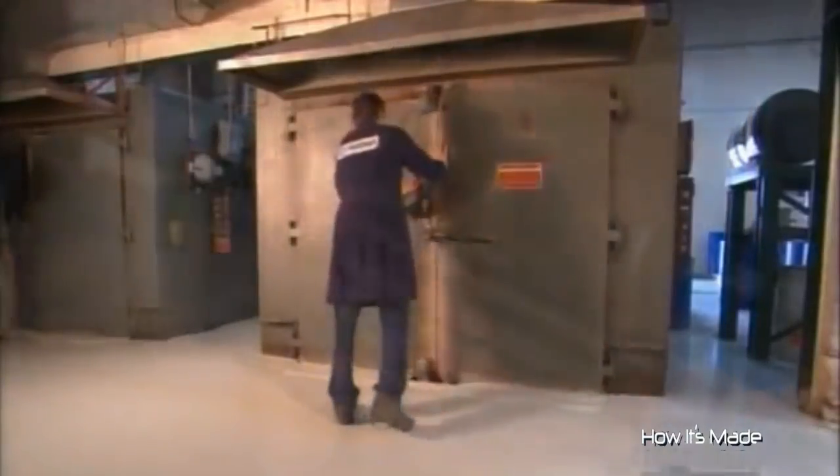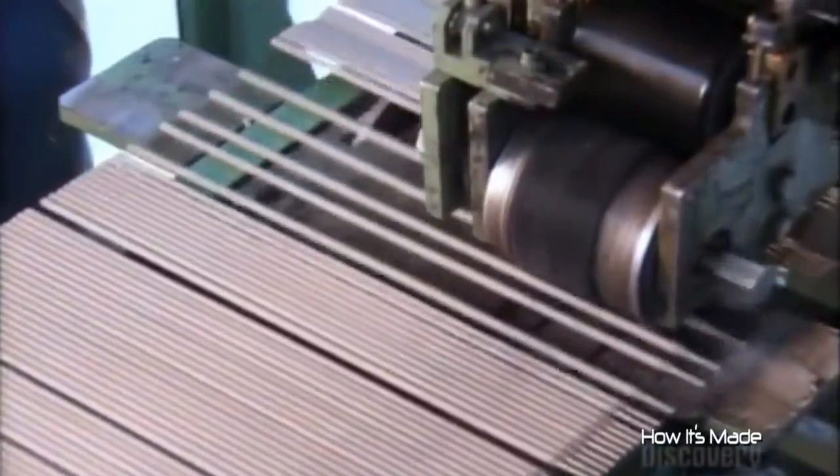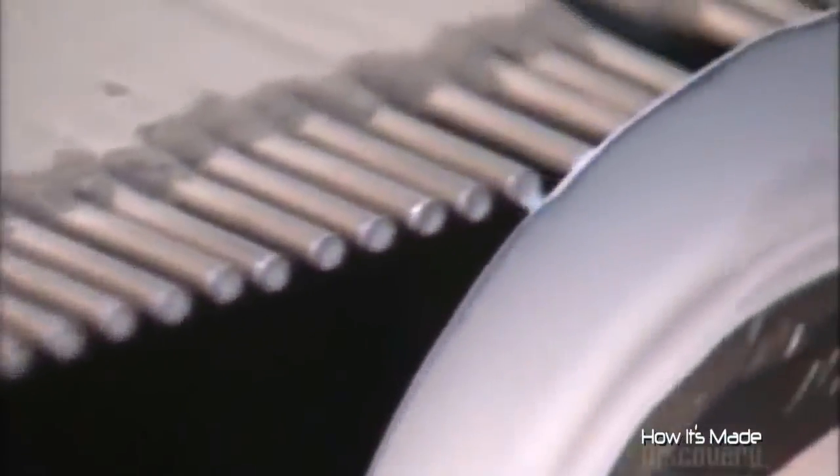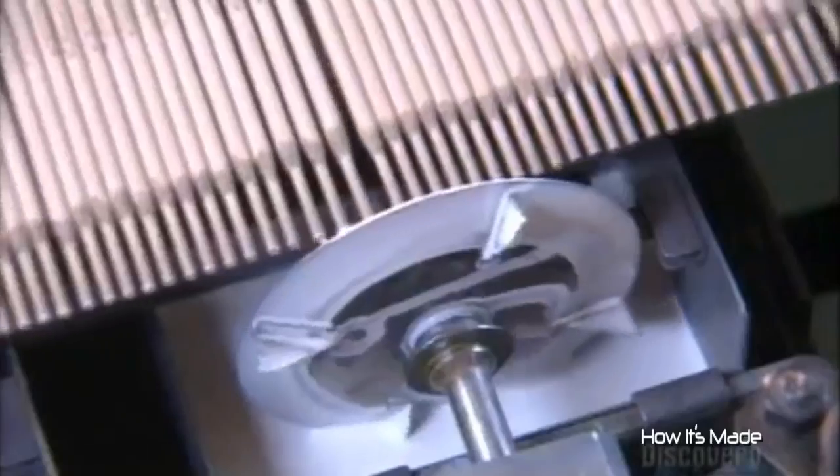Once they've cooled, the electrodes head into a printing press. An ink wheel first prints the model and type of current that's required. Another ink wheel then applies a color to the gripping end. It's another way to differentiate the model in case the lettering on the side rubs off in storage.